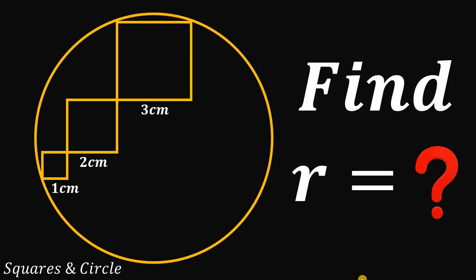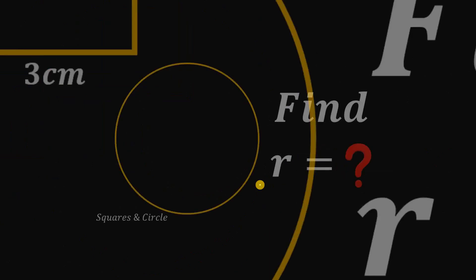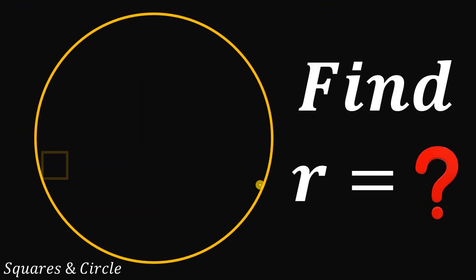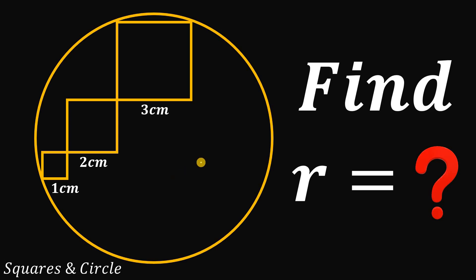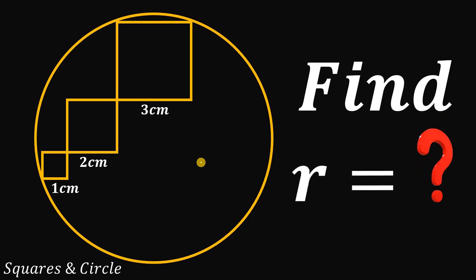Can you solve this geometry challenge? Here's the question: start with a circle, then draw some squares inside the circle having side lengths of one centimeter, two centimeters, and three centimeters respectively. The question is: what is the length of the radius of this circle? Pause the video if you want to give this problem a try.